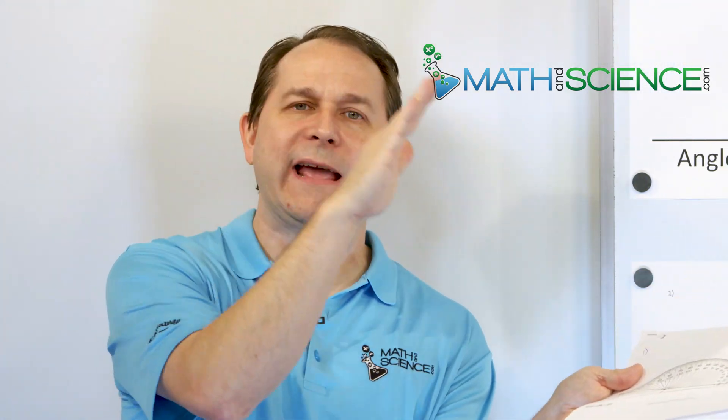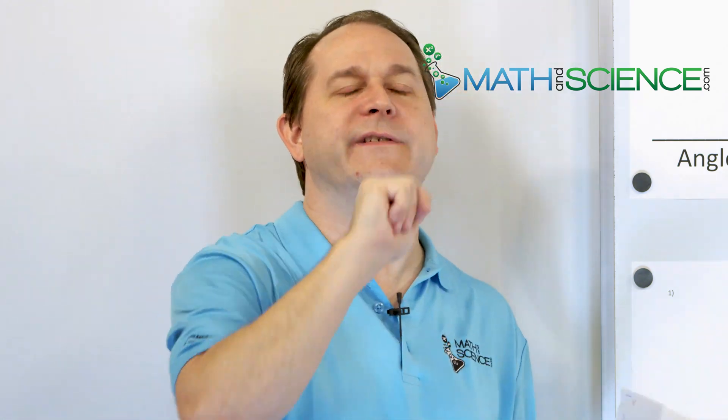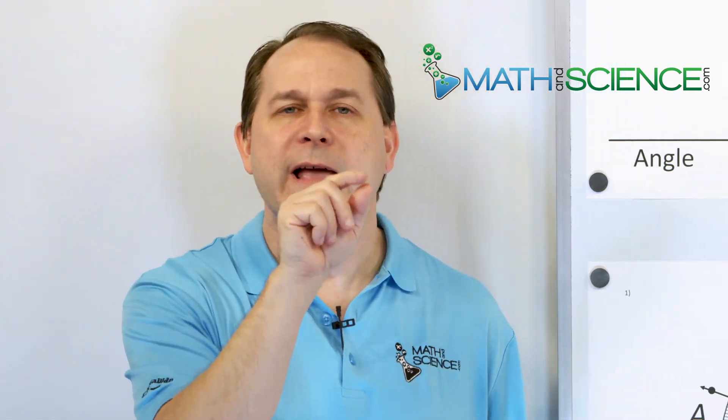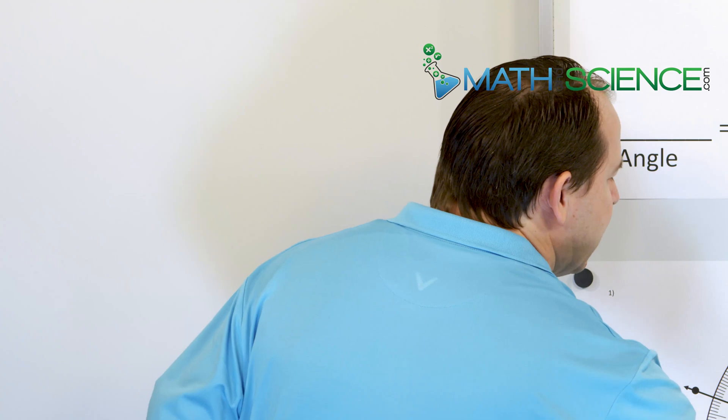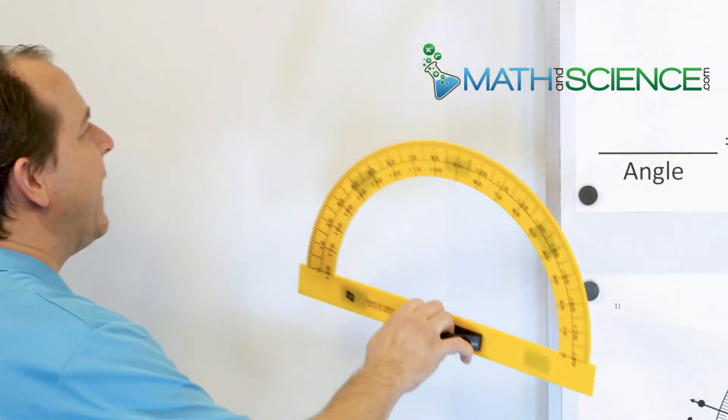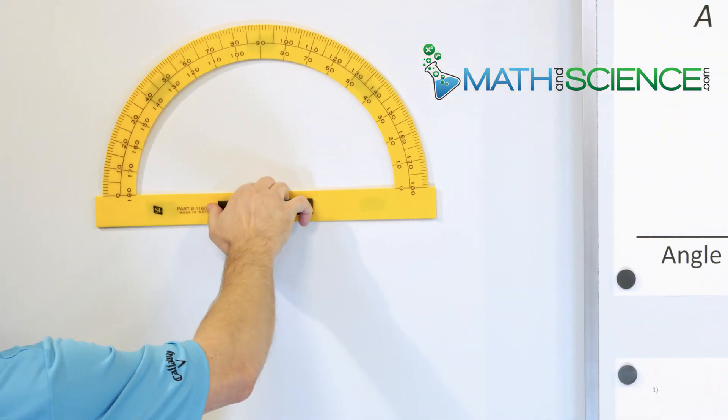Let me talk about the measurement part first. We want to measure an angle — we want to find out how open the angle is or how closed it is. That is what the measure of an angle is. If you open it all the way up, 360 degrees is a full circle. Anything less than that is less than 360 degrees. We talked about right angles, acute angles, and obtuse angles.